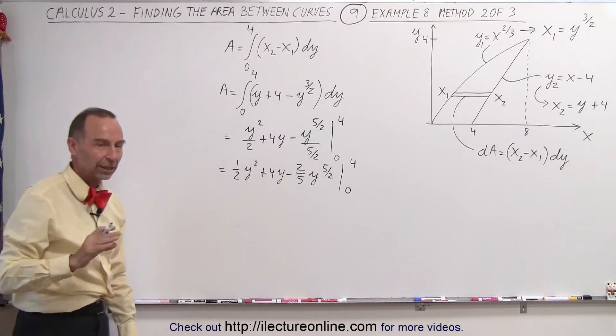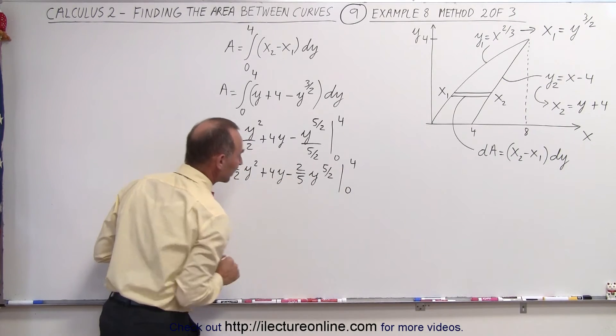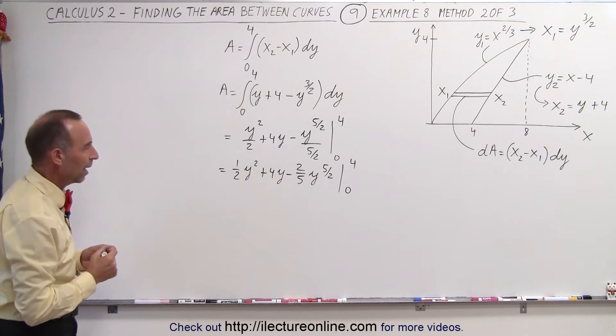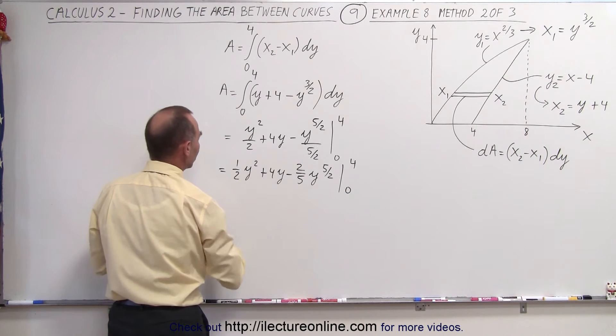Now let's go ahead and plug in the limits and see what we get. When we plug in the lower limit of course we don't get anything, we only need to use the upper limit. So plugging that in here we get 16 divided by 2 which is 8.